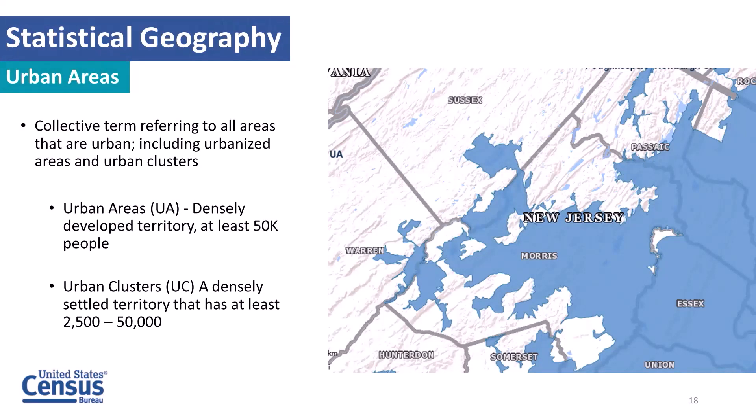Urban areas is a collective terminology referring to both urban areas and urban clusters. Urban areas are densely developed territory with at least 50,000 people, usually near a larger populated place. Urban clusters have at least 2,500 but up to 50,000 people and surround these urban areas. Going forward from the 2020 census, urban areas will no longer be distinguished as either urbanized area or urban cluster — all qualifying areas will simply be designated urban areas.